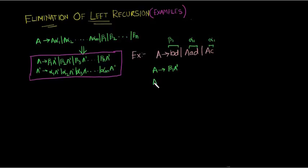That is A prime gives A prime gives alpha 1, alpha 1 A prime, and we have, oh this is alpha 2, and alpha 2 A prime. And don't forget the epsilon. Now we can substitute the beta 1, alpha 1, and alpha 2 values here to get the resulting production.